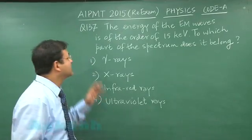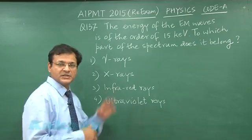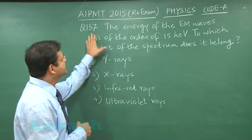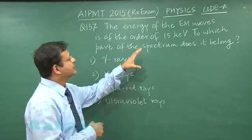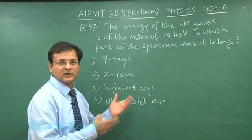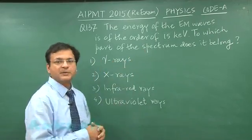Now the next question that is question 137 which is a memory based question - it says that the energy of the EM waves is of the order of 15 kilo electron volt. This is what is given to you - to which part of the spectrum does it belong?